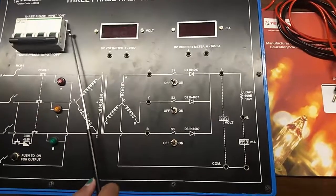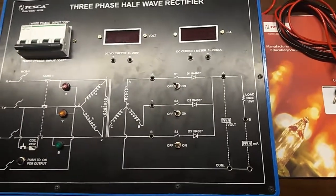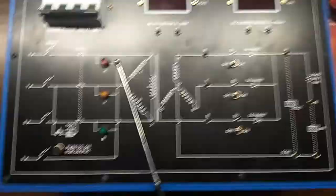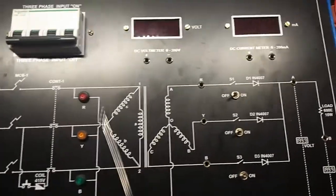This is the MCB, the main switch to turn on or off the kit. This is the three-phase connection. We can see red, yellow, blue—RYB.